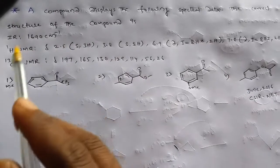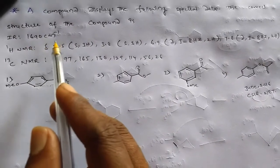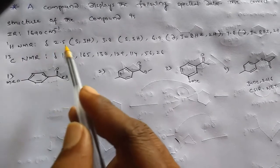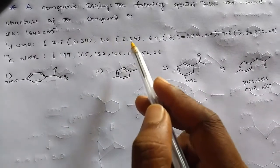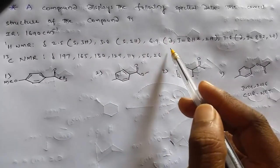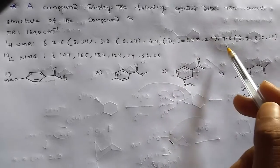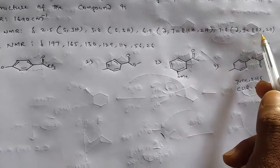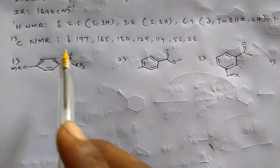We have IR spectral data at 1690 cm⁻¹, and ¹H NMR: δ 2.5 singlet (3H), δ 3.8 singlet (3H), δ 6.9 doublet J = 8 Hz (2H), and δ 7.8 doublet J = 8 Hz (2H).